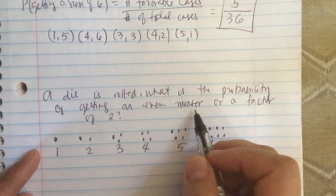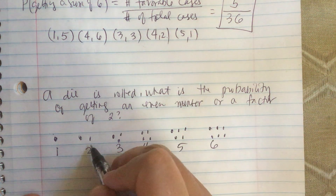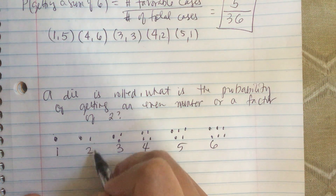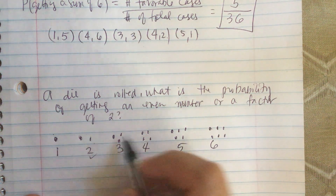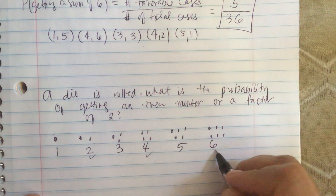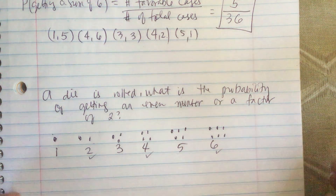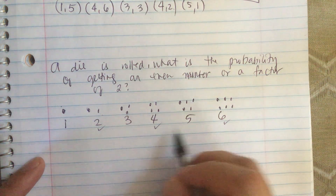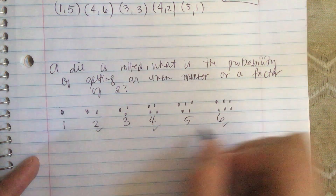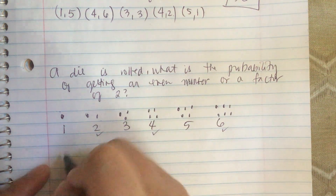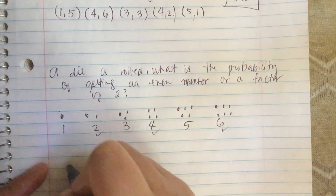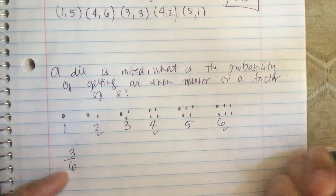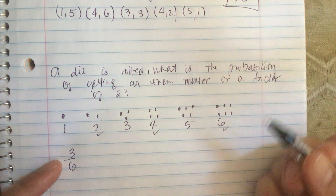The probability of getting an even number: the even numbers are two, four, and six, so there are three favorable cases out of six, which is three over six or one half.